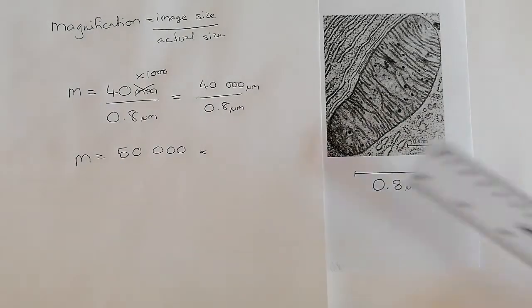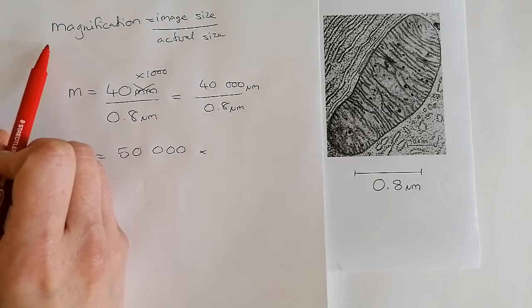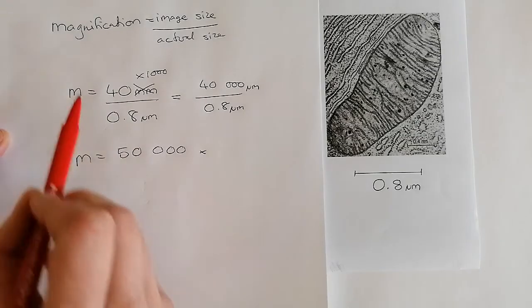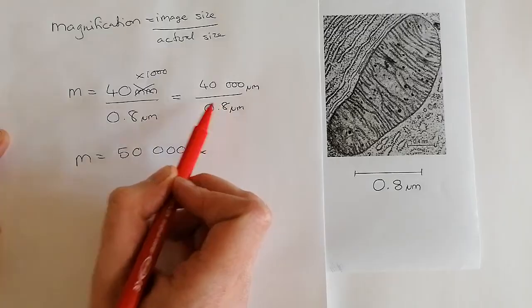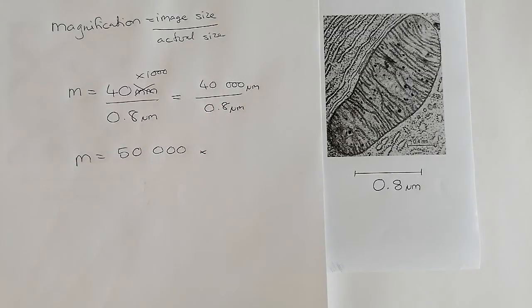Just before we move on, I just want to go over really quickly how I've laid out my working and how I would like you to lay yours out. We've got the equation written out in full. I've got my working written with the units, which is really important because you get quite a lot of marks for magnification questions. And if you mess up your units, but it's obvious where you've messed it up, you can still gain some of your marks.